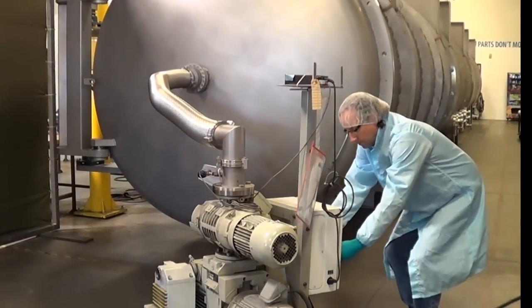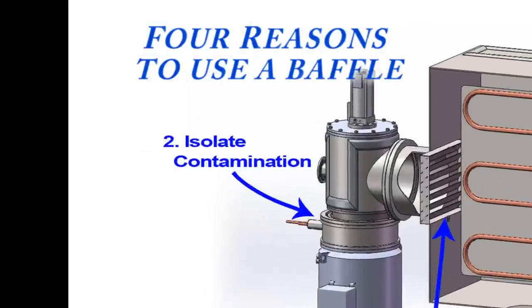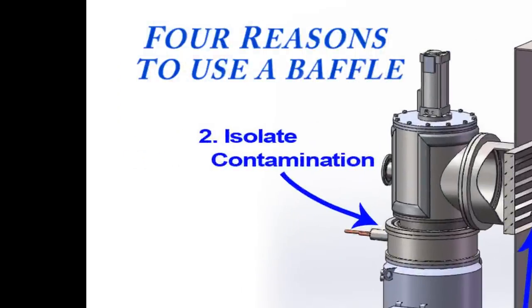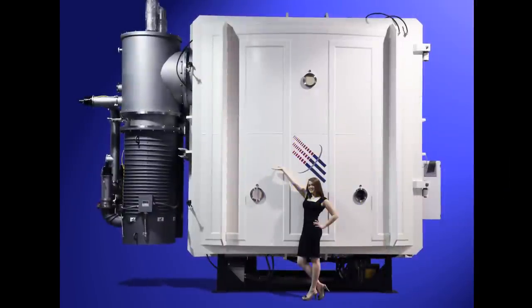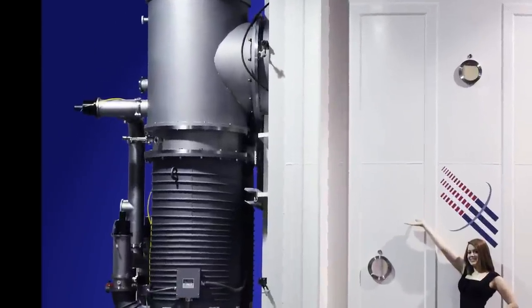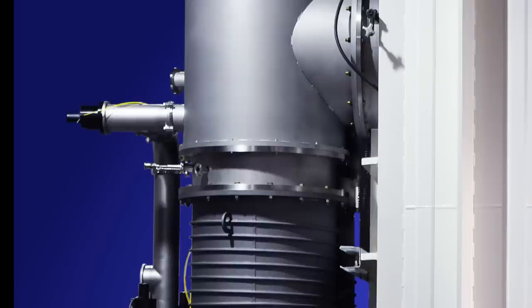Secondly, baffles isolate contamination within a vacuum system, thus trapping it so contamination does not affect the process or other equipment such as pumps. For example, baffles are typically used between a diffusion pump and the chamber.